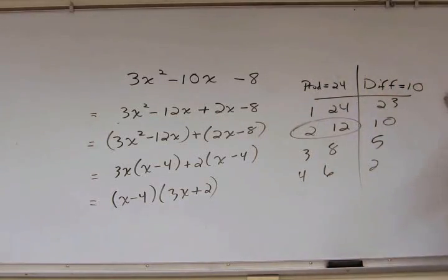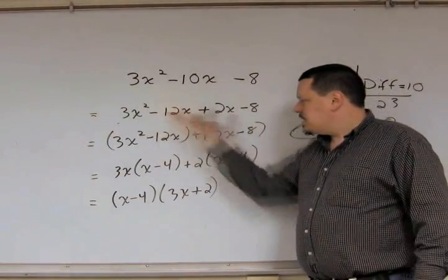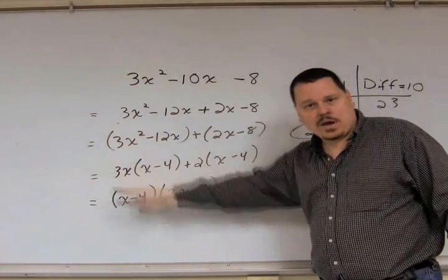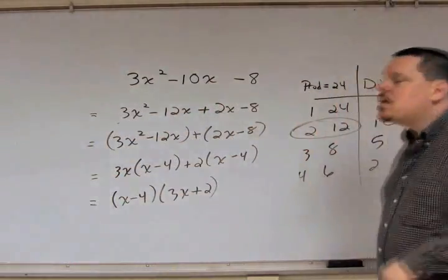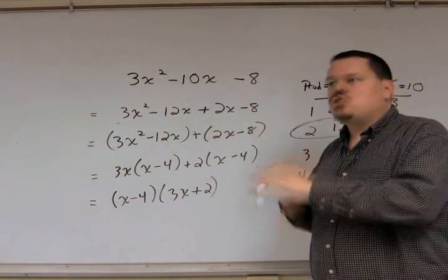You have to find a pair of two numbers with a certain product and difference, set it up, factor by grouping, and work it out. Now, this next method I'm going to show you is short.